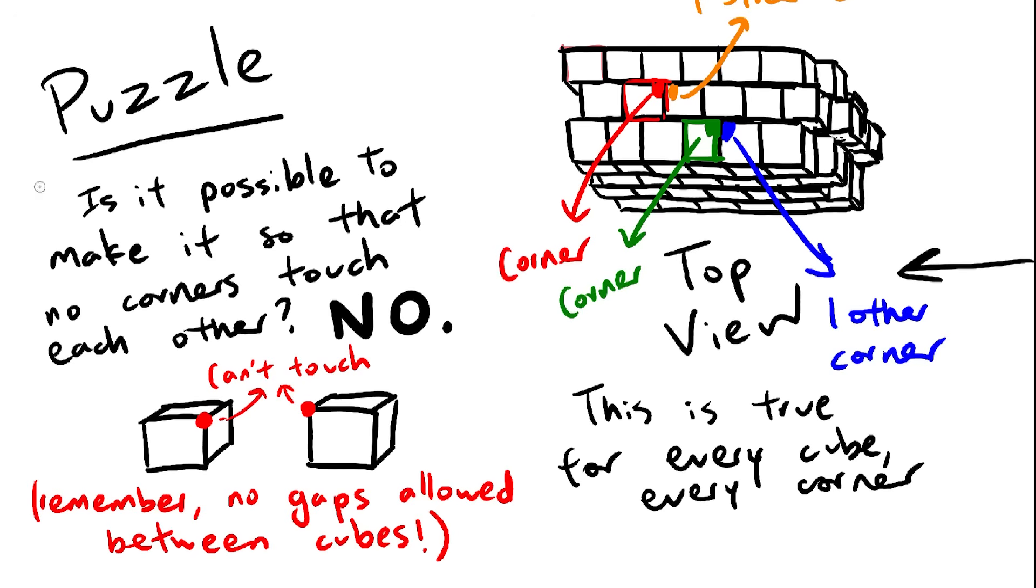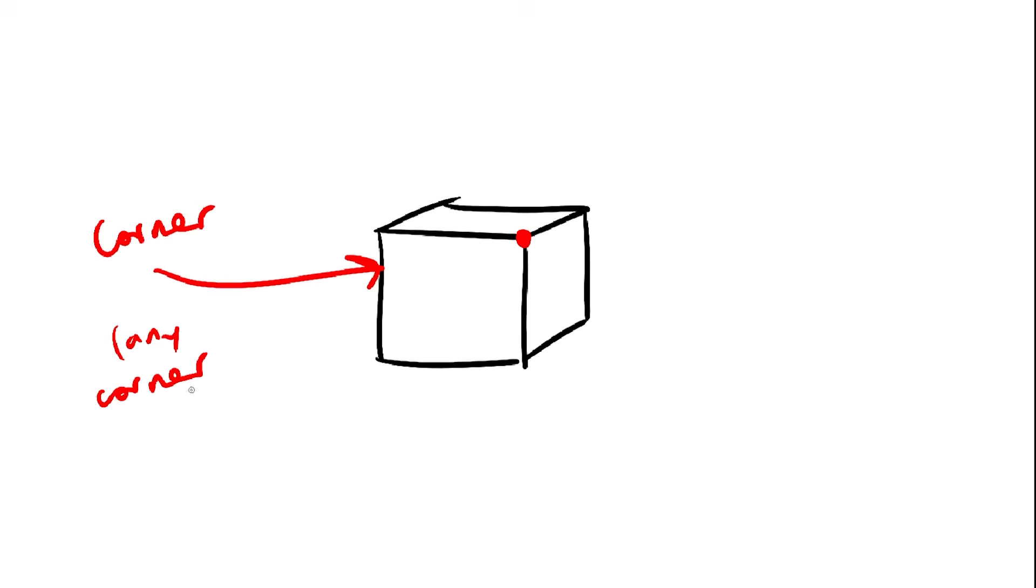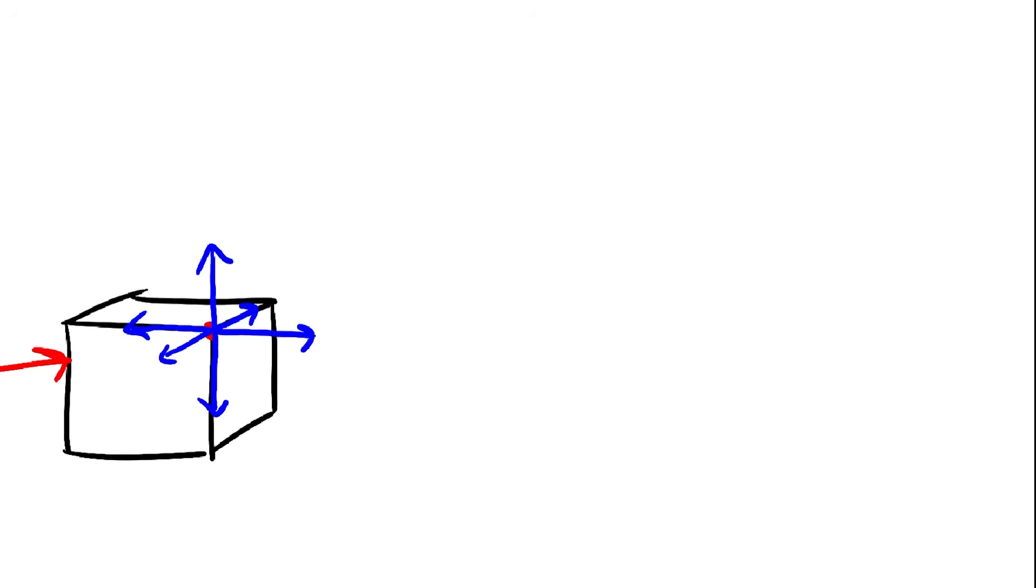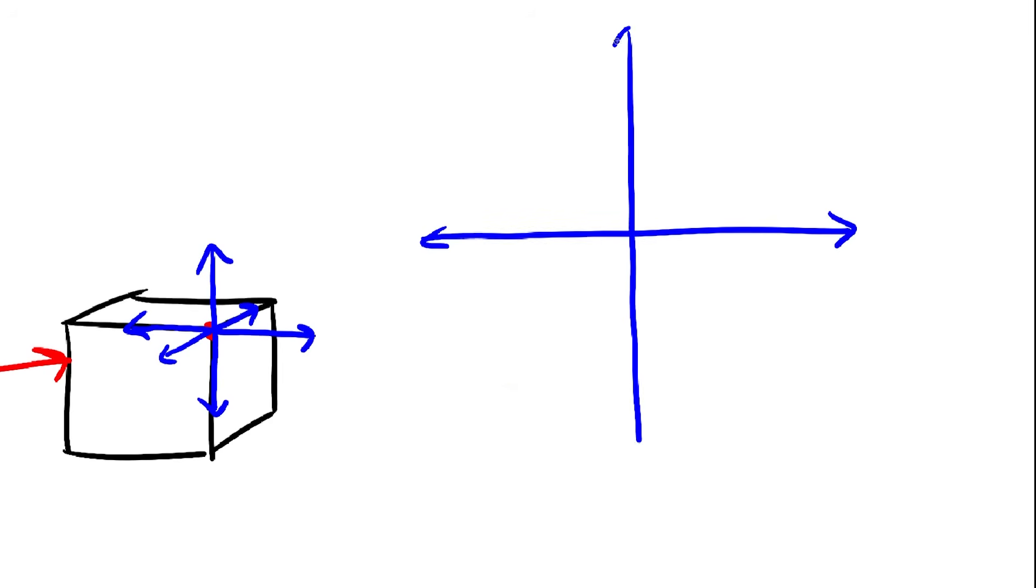Okay, the answer is no, it's not possible. Take a random cube and examine any one of its corners. Draw the x-axis, y-axis, and z-axis, which splits the space around the corner into eight octants, the same way the x and y axes split the coordinate plane into four quadrants.